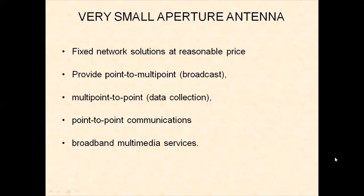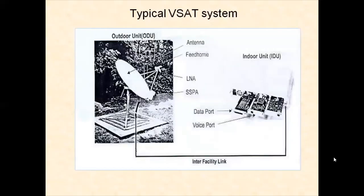V-SAT provides point-to-multipoint (broadcast), multipoint-to-point (data collection from many points to one), and point-to-point communications, as well as broadband multimedia services — text, audio, video, and animation. A typical V-SAT system consists of an outdoor unit and an indoor unit with a link between them. The outdoor unit consists of an antenna — mostly a parabolic reflector antenna — oriented azimuth-wise and elevation-wise toward the satellite so that it can pick up the signal.